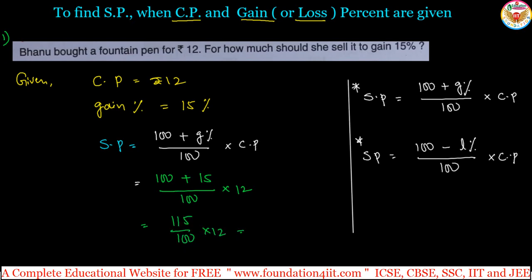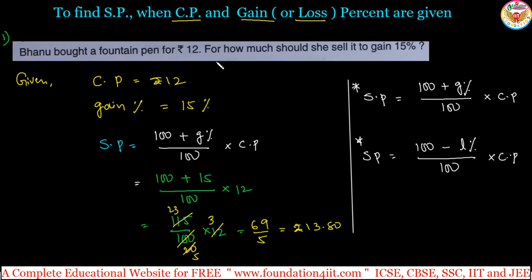Calculating 115 / 100 × 12: this gives 69 / 5, which equals 13.8. So the selling price is rupees 13.80. That means by purchasing the pen for 12 rupees, if you want 15 percent profit, you should sell it for rupees 13.80. We can use these two formulas directly to find the selling price when CP and gain or loss percentage are given.